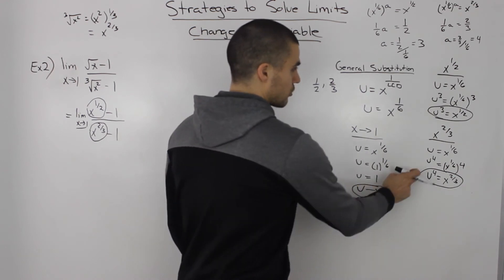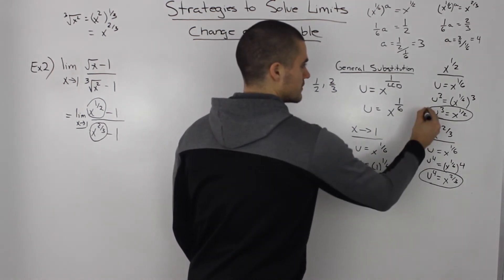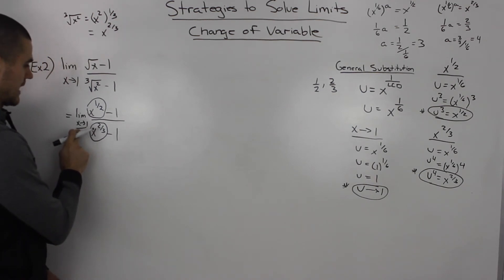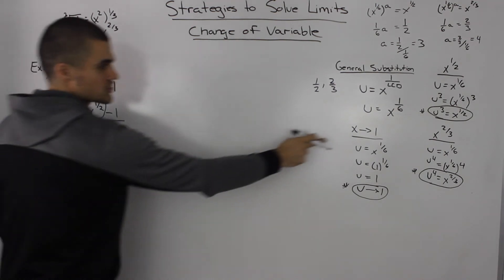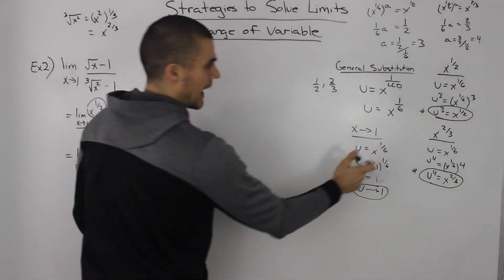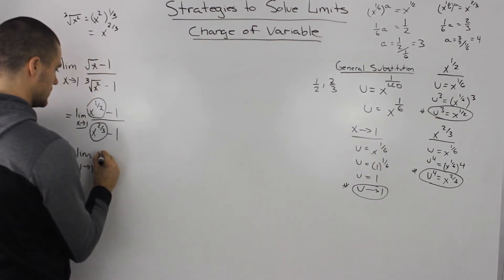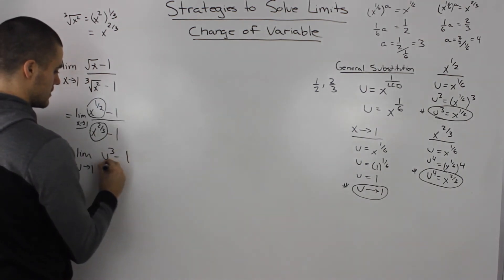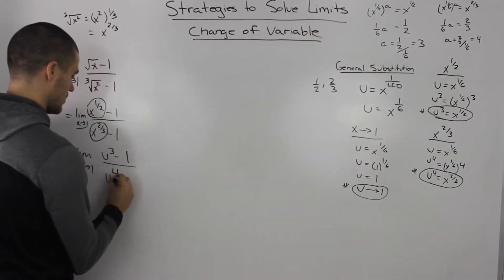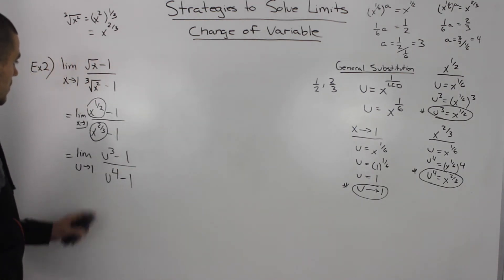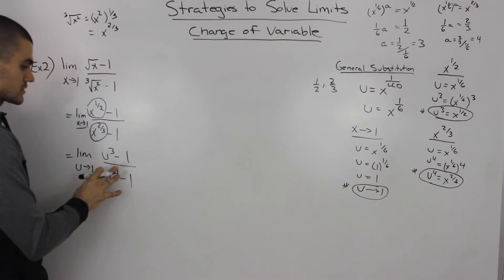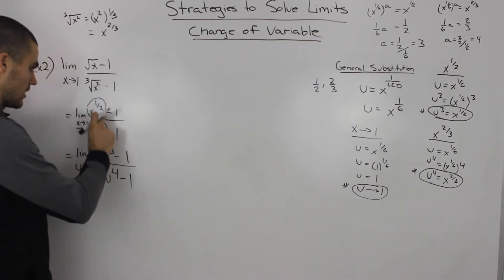So now we can take our three new expressions and substitute them into the limit. The limit as x approaches 1 becomes the limit as u approaches 1. x^(1/2) becomes u^3, so the numerator is u^3 minus 1. And x^(2/3) becomes u^4, so the denominator is u^4 minus 1. Notice how we've taken this limit in terms of x and got a new limit all in terms of u, and it looks a lot smoother — no weird exponents.